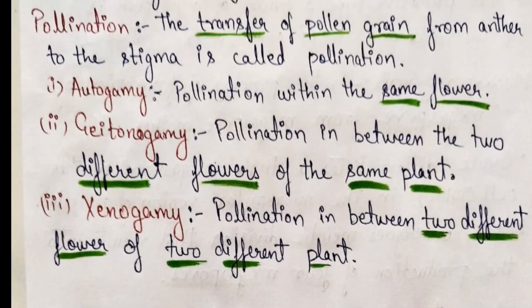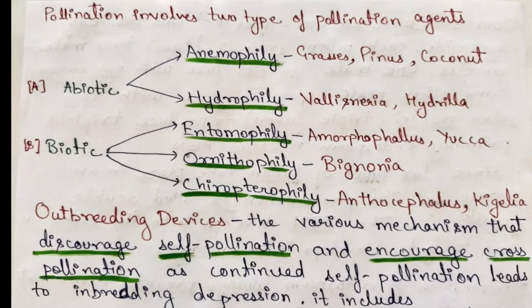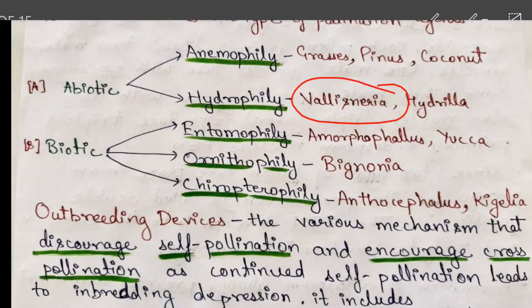There are two types of flowers: cleistogamous flowers, which never open and ensure autogamy, and chasmogamous flowers, which open and allow both self-pollination and cross-pollination. Pollinating agents are abiotic and biotic. Abiotic agents include anemophily (wind pollination, e.g., grasses, Pinus, coconut) and hydrophily (water pollination, e.g., Vallisneria and Hydrilla).